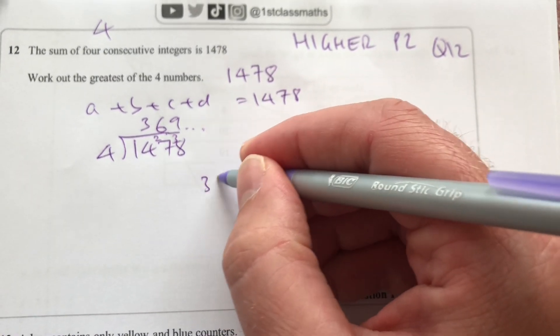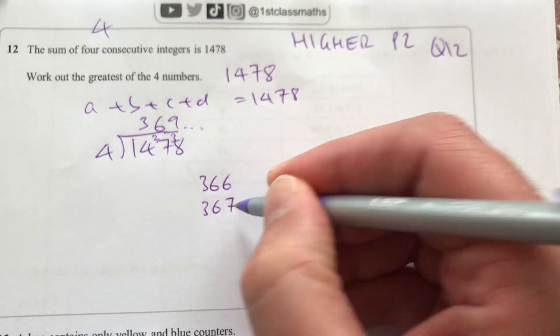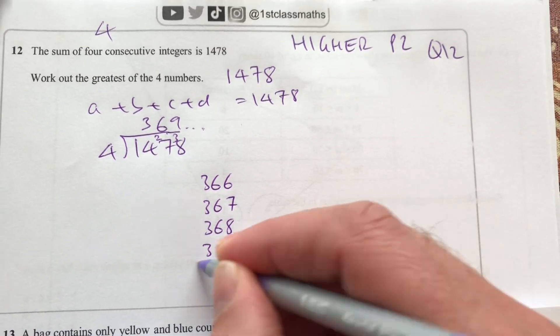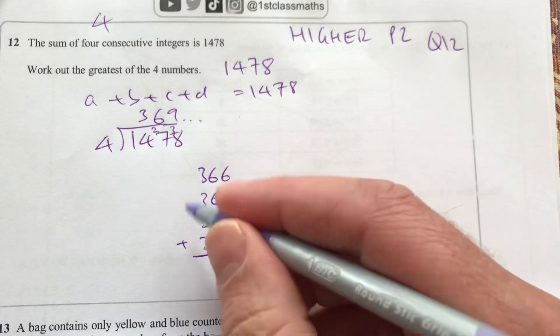So let's say I choose 366, 367, 368, and 369 as my four consecutive numbers. And I add those all up.